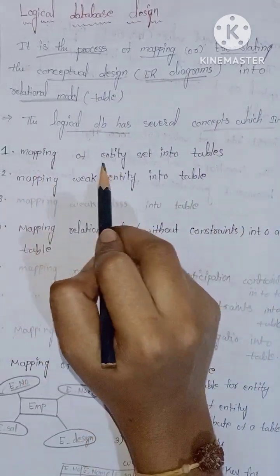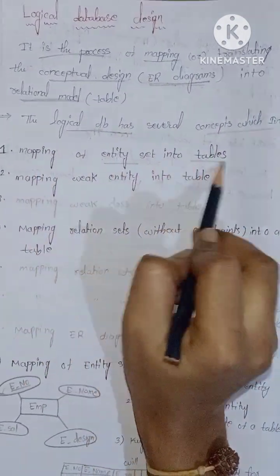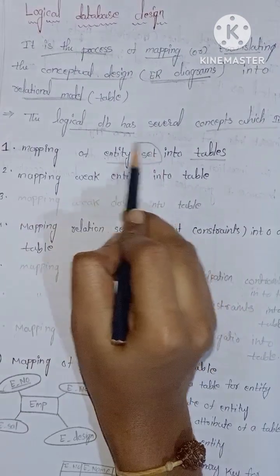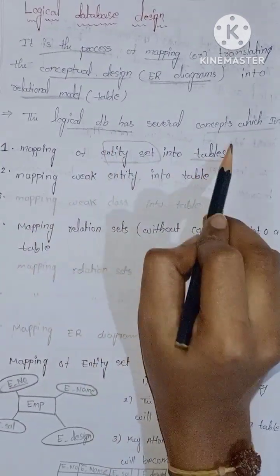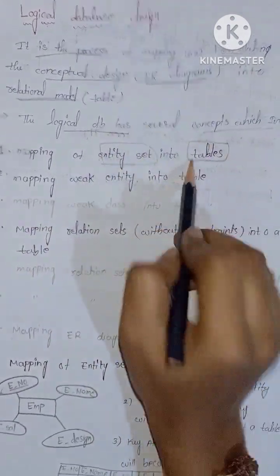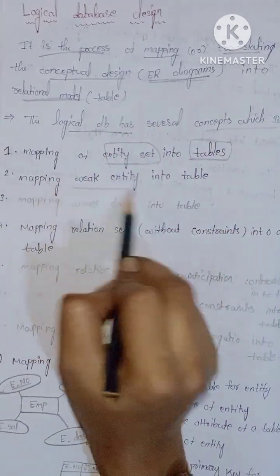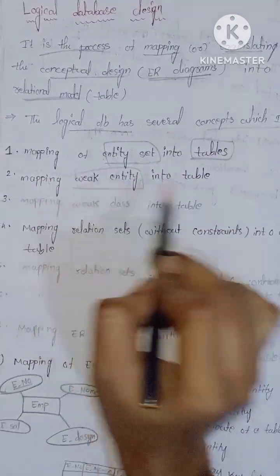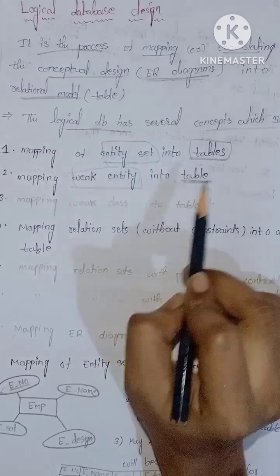The key concepts include mapping of Entity Sets into tables, and mapping of Weak Entity Sets into tables.